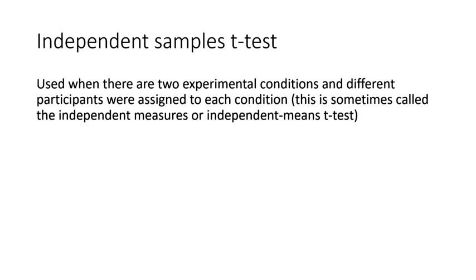An independent samples t-test is used when there are two experimental conditions, that is two groups, and different participants were assigned to each condition. The independent samples t-test is sometimes called independent measures or independent means t-test.